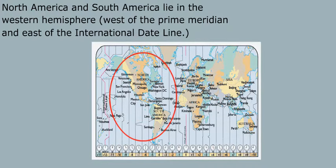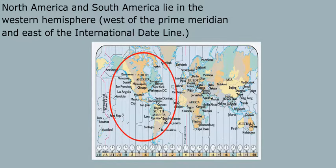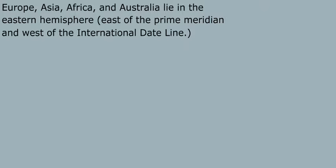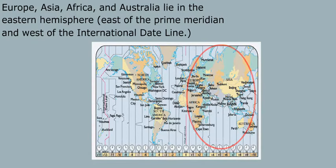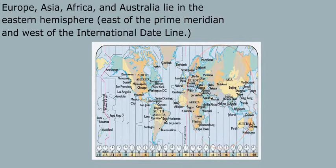North America and South America lie in the Western Hemisphere, west of the prime meridian and east of the international dateline. Europe, Asia, Africa, and Australia lie in the Eastern Hemisphere, east of the prime meridian and west of the international dateline.